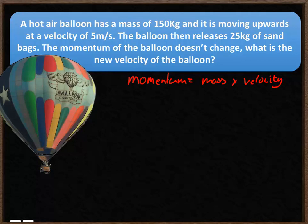First, calculate the balloon's momentum before releasing the sandbags. Mass is 150 kilograms, velocity is 5 meters per second, so the momentum is 750 kilogram meters per second.